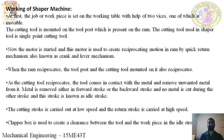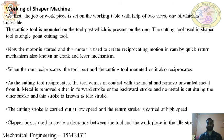In some cases, bench vices are placed on the table to hold the workpiece — one of the jaws is movable. The cutting tool is mounted on the tool post, which is connected to the ram. The ram reciprocates carrying the tool post. The cutting tool used in the shaper is a single-point cutting tool.